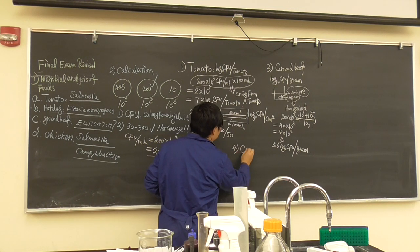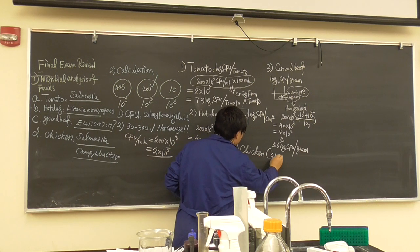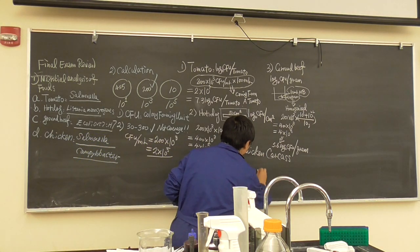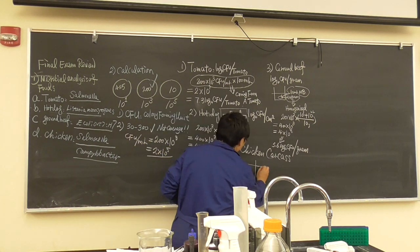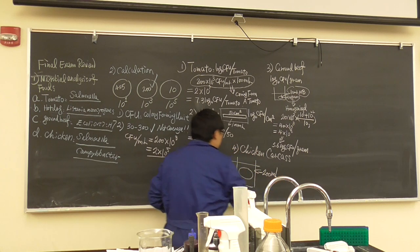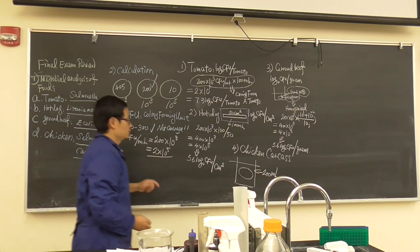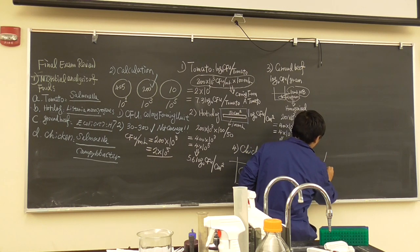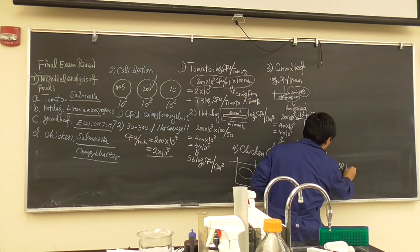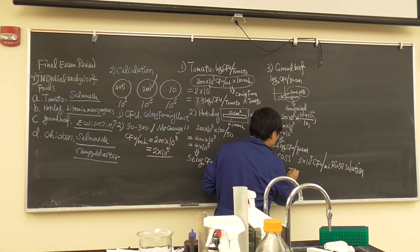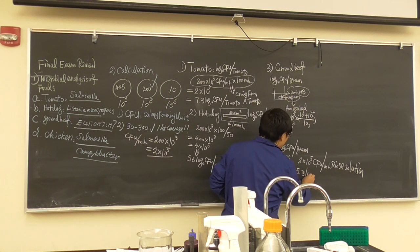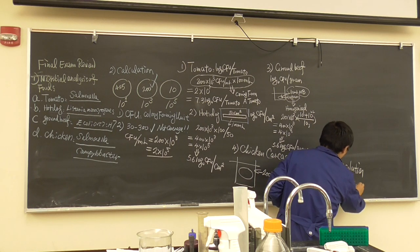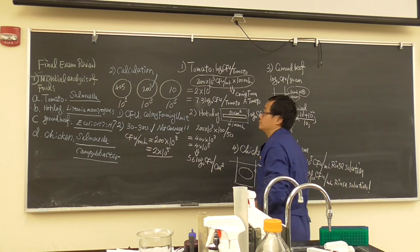For chicken carcass, we used a large bag with the whole chicken and added 200 mL rinse solution. There's no way to do it differently, so the result is simply expressed as CFU per mL rinse solution. For example: 2 × 10⁵ = 5.3 log₁₀ CFU per mL rinse solution.